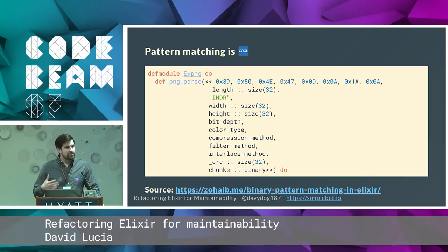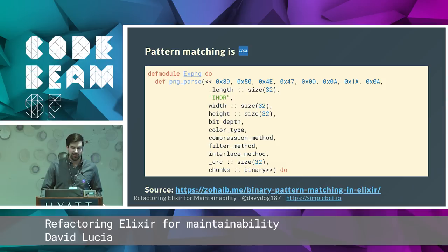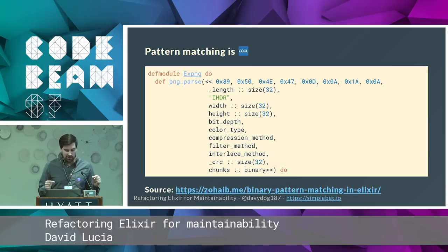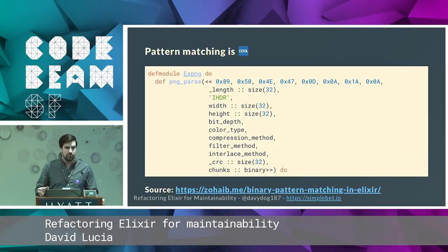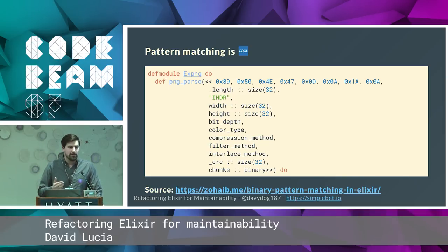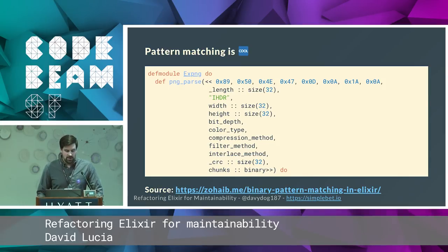What drew me into Elixir from the get-go was how cool pattern matching is. Here's an example of how you can use pattern matching to take a binary PNG and pull out the width, the height, and other information from the binary. If I imagine doing this in any other language, it's like hundreds of lines of code. In Elixir, it's just as simple as these ten lines. I found that to be fascinating — that's what really drew me into the ecosystem.